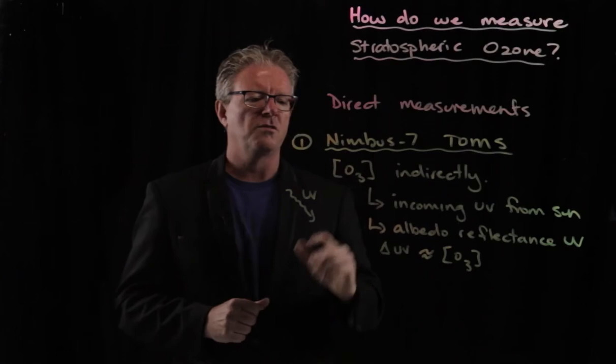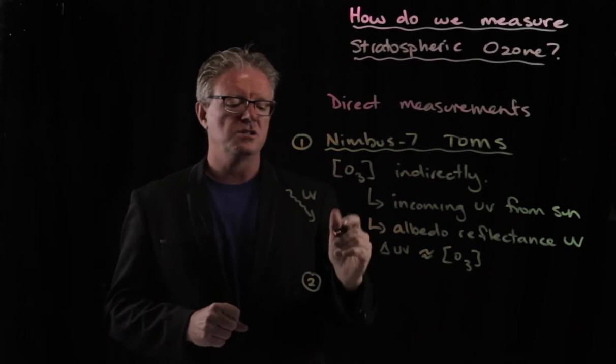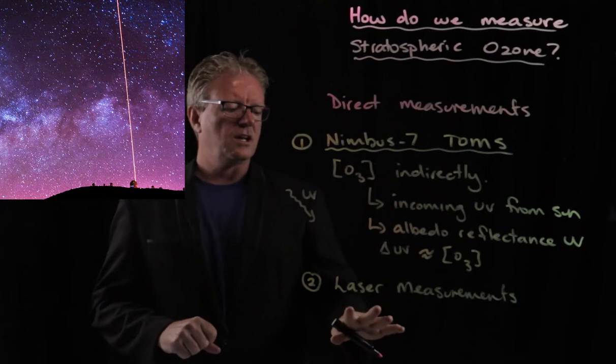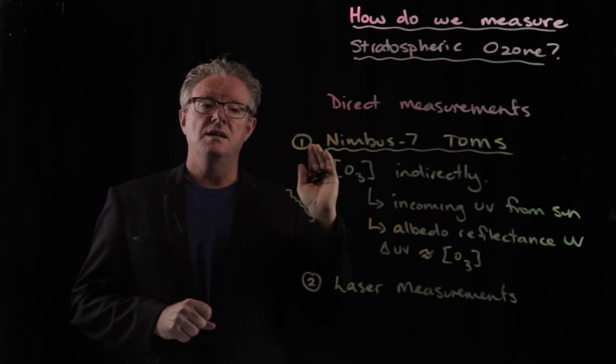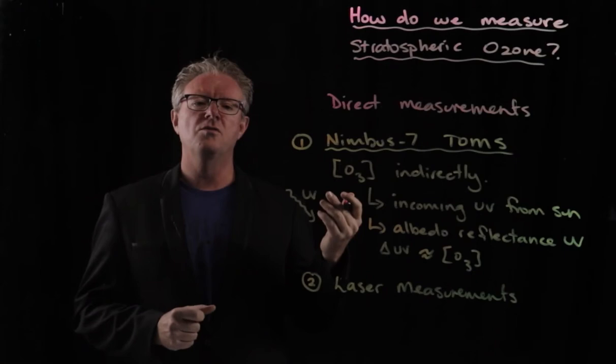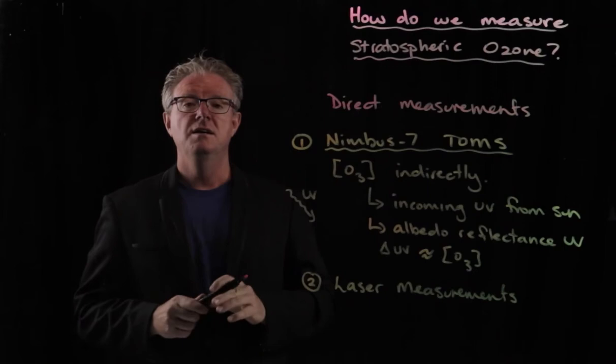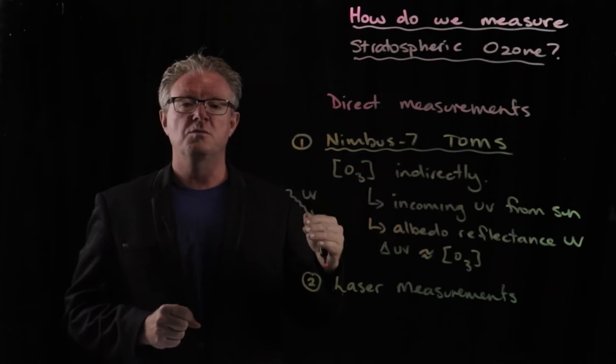The second way in which we can monitor ozone concentrations is by emitting lasers into the atmosphere. So, laser measurements. There are lasers on telescopes. They shoot a laser beam at a specific wavelength up into the atmosphere, and the degree of absorbance of that laser, because they have a guide laser and a measurement laser, the degree of absorption determines the concentration of ozone.